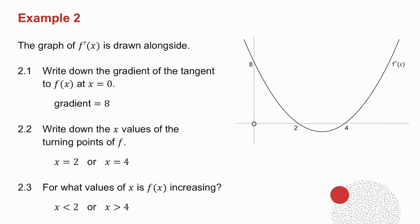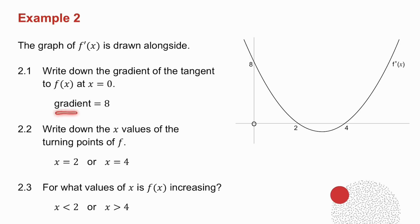The first question says: write down the gradient of the tangent to f(x) at x equals 0. Remember, the gradient of a tangent means the derivative. So what you want to know is: what is the derivative when x is 0? When x is 0, the y-value is 8. This graph is my derivative graph, so when x is 0 the derivative is 8. So the gradient is 8.